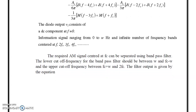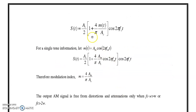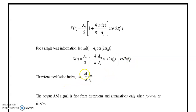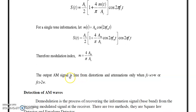The filter output is: S(t) = (Ac/2) · [1 + (4/π) · m(t)/Ac] · cos(2πfc·t). For single-tone information, m(t) = Am·cos(2πfm·t), then S(t) = (Ac/2) · [1 + (4/π)·(Am/Ac)·cos(2πfm·t)] · cos(2πfc·t). Therefore, the modulation index = (4/π) · (Am/Ac). The output AM signal is free from distortion only when fc > 2W.